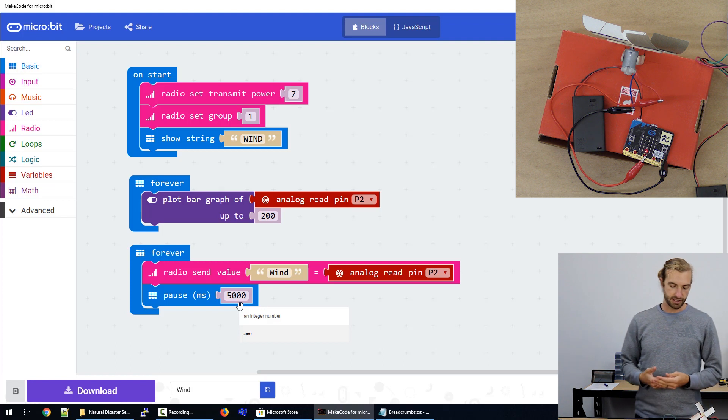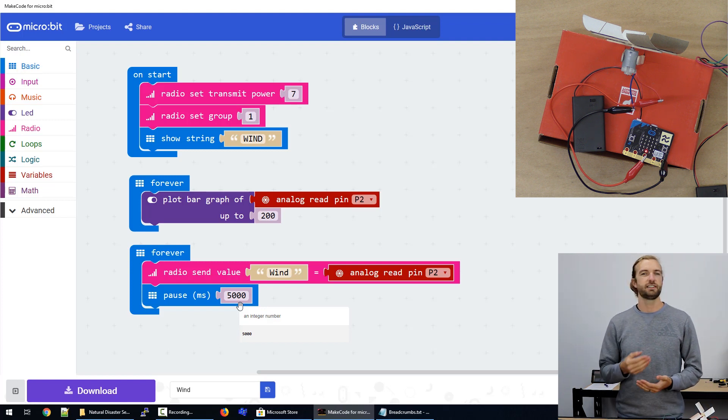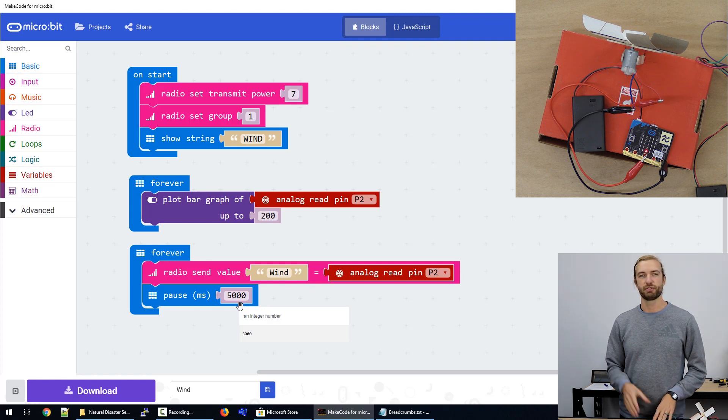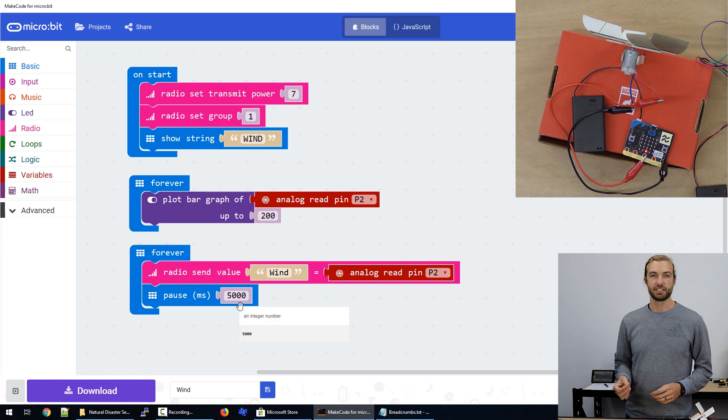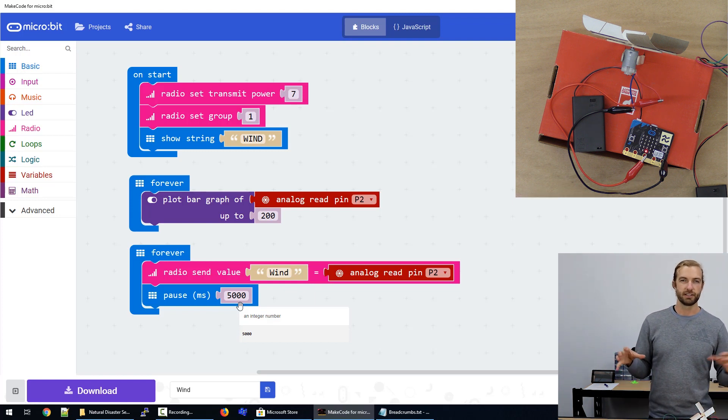So I didn't feel like it was necessary to send constant five times a second data over the radio to our receiver for the wind speed, when wind speed is not something that really changes that rapidly. So we're sending it once every five seconds so we don't bog down our receiver with lots of different info over the same radio channel.